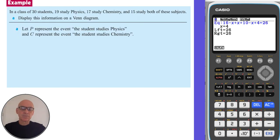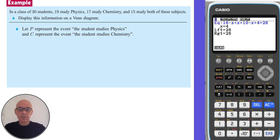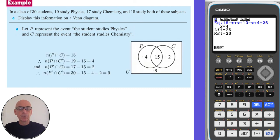In this question we're asked to display the given information in a Venn diagram. We start by placing 15 in the intersection. Subtracting 15 from 19 gives 4 students who only study physics, and subtracting 15 from 17 gives 2 students who only study chemistry. Finally, subtracting all four values from the 30 students in the class gives 9 students who study neither, completing the Venn diagram.